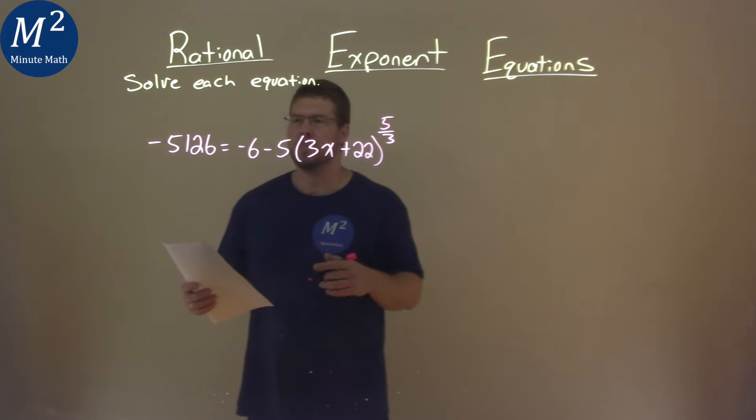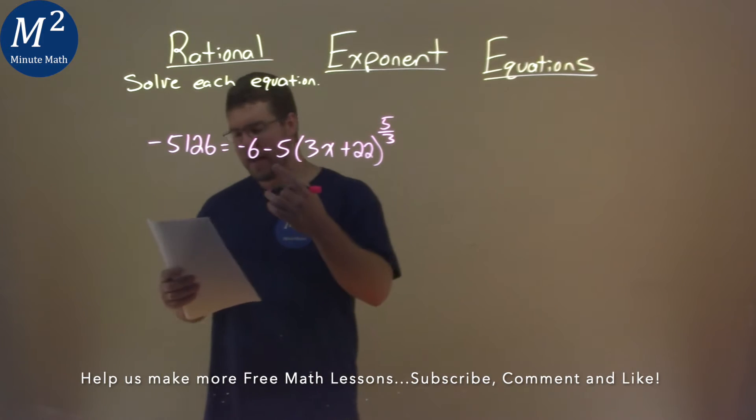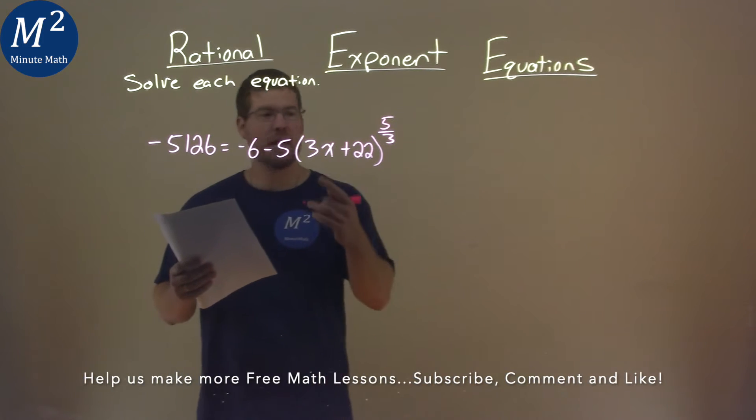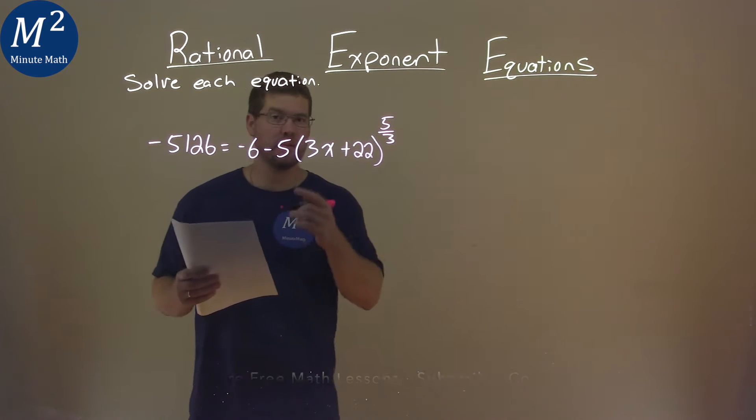We're given this problem: negative 5,126 equals negative 6 minus 5 times the quantity 3x plus 22, all to the 5/3 power. We've got to solve this equation.